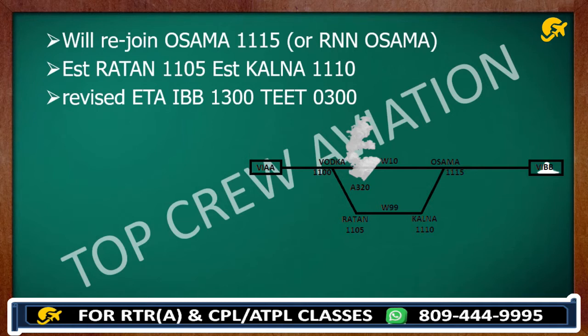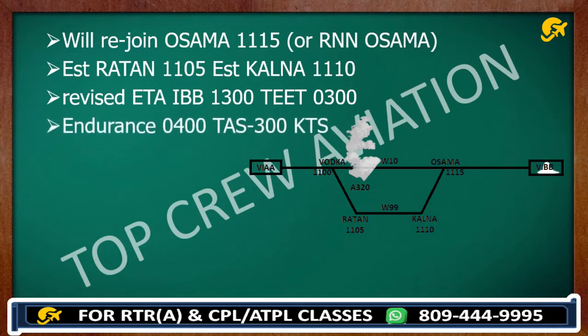TT 0300. Endurance 0400. TAS 300 knots. Request permission.